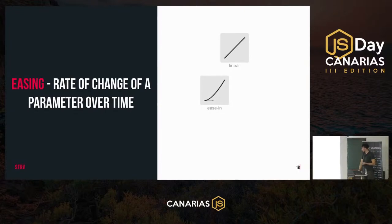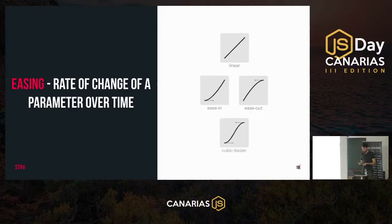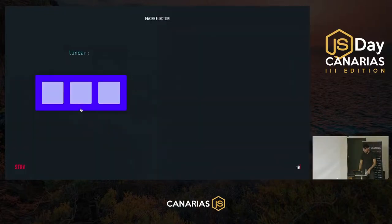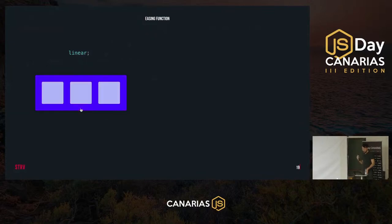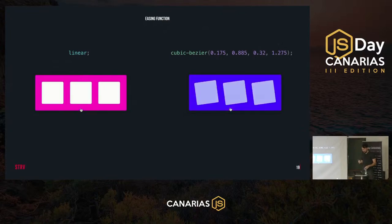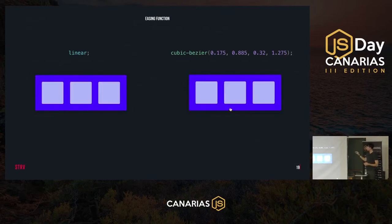We can use easings like ease-in and ease-out, where we have acceleration in the beginning and constant speed by the end, or the other way around. We can also use a custom cubic-bezier function where we can specify the speed curve in whatever shape we want. Easings are very powerful because they help create the illusion of things moving slower or faster. This example with a custom cubic-bezier looks more alive and appears to be faster, but the total duration of both animations is the same.